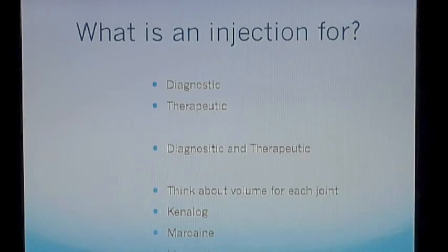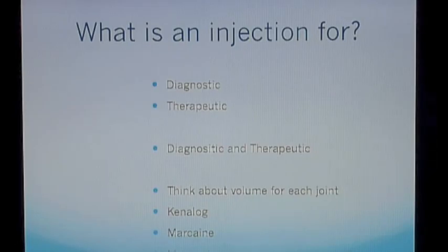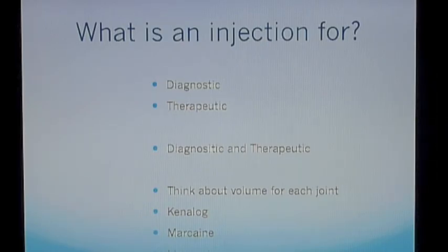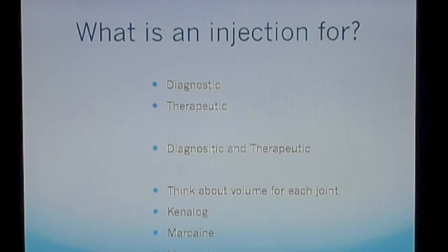Those of you who inject a knee and the shoulder joint will know that you can inject quite a considerable volume into those joints without causing the patient too much discomfort. Because the joints in the foot and ankle are much smaller, the volume you're going to inject is a lot less, and if you try to inject the same volumes as into a knee you could end up causing the patient pain. I use Kenalog, which is more efficacious than Depomedrone — 40 milligrams is contained in one millilitre. I also use Marcaine or Lignocaine, and you must tailor the amount of local anaesthetic to the joint you're going to inject.